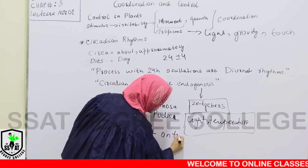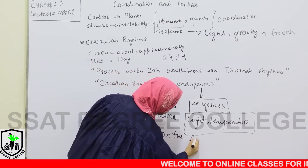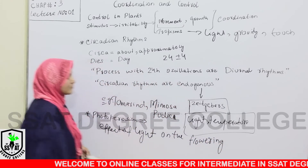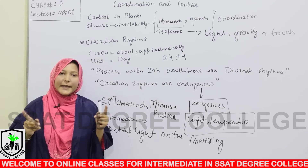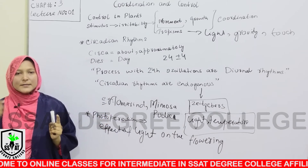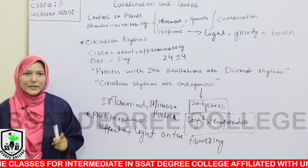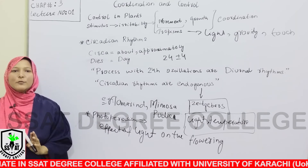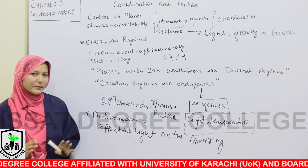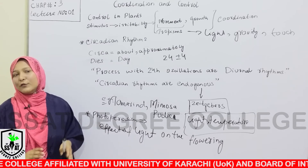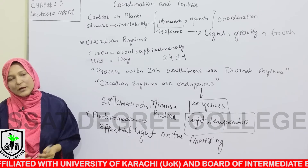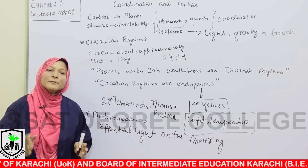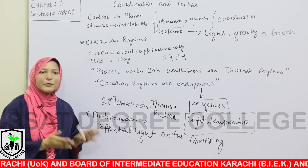Photoperiodism is the effect of light on flowering — determining how much daylight is needed — when the plant will flower and decide its pattern. This phenomenon is called photoperiodism. Photoperiodism has a lot of importance, especially in agriculture. We divide crops in photoperiodism.